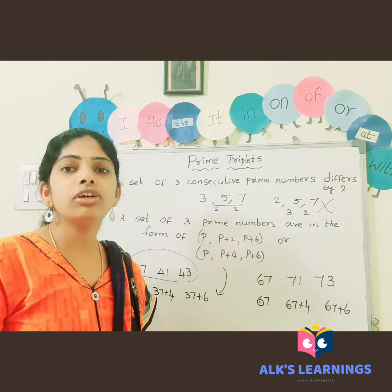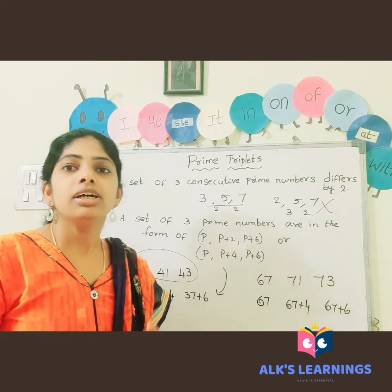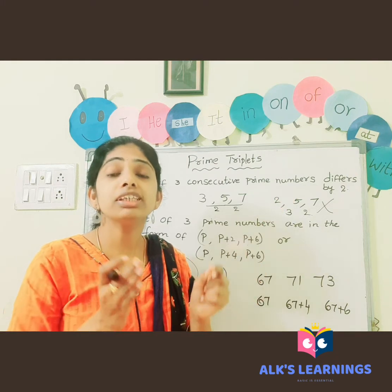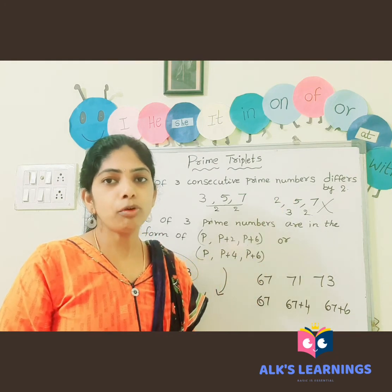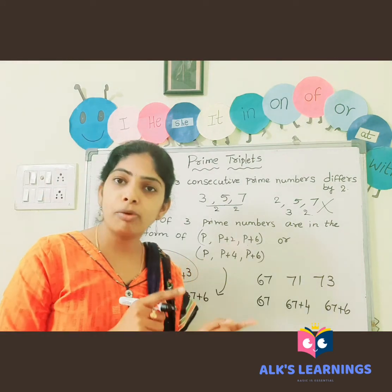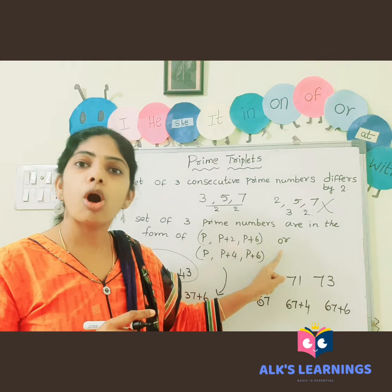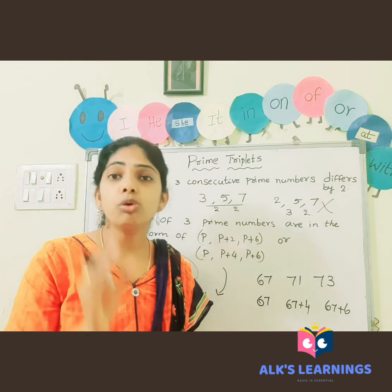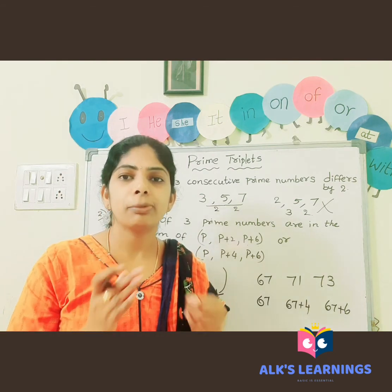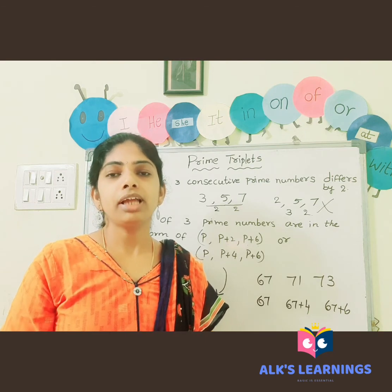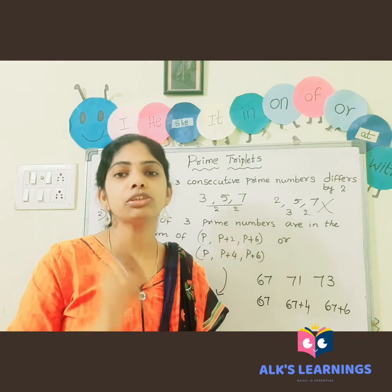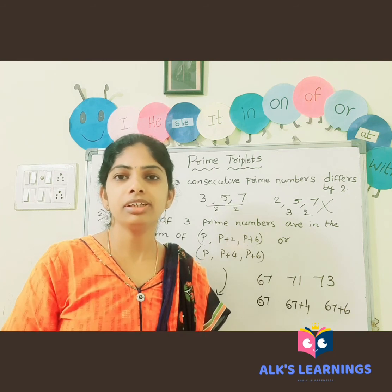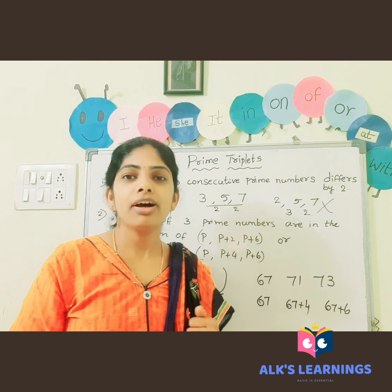So what is the rule for becoming a prime triplet? A set of three consecutive prime numbers differs by two. One more condition: a set of three prime numbers in the form of P, P+2, P+6 or P, P+4, P+6. If it satisfies either condition, those prime numbers are called prime triplets. You can take a list of prime numbers and check whether three numbers are prime triplets or not. See you in the next video — take care, bye-bye!